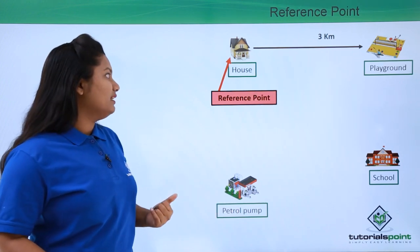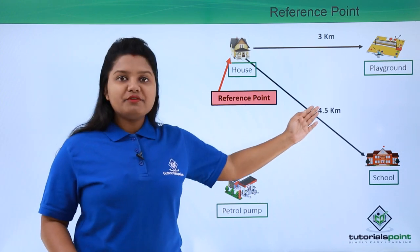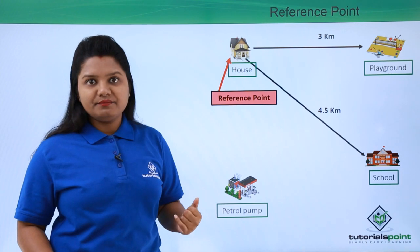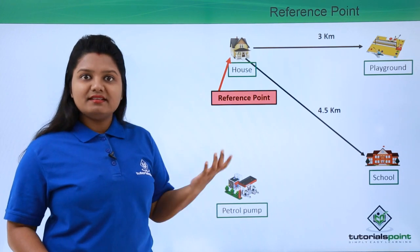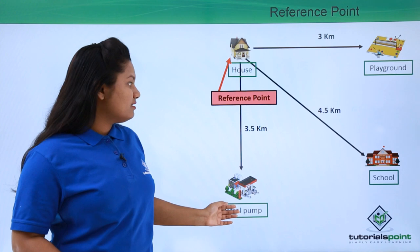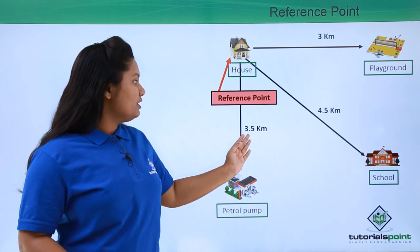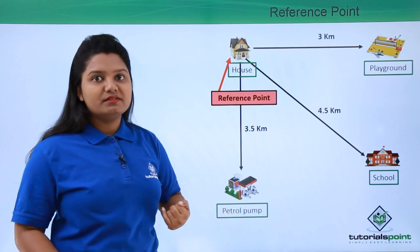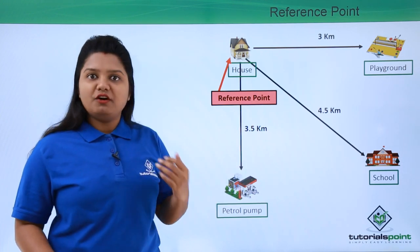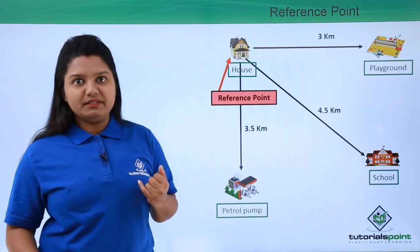Similarly, the school is located 4.5 kilometers away from the house towards the southeast. The petrol pump is located towards the south, 3.5 kilometers away from the house. This is how we can specify the position of objects whenever we have a reference point.